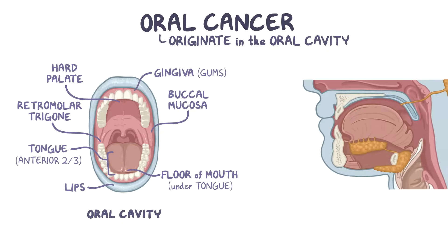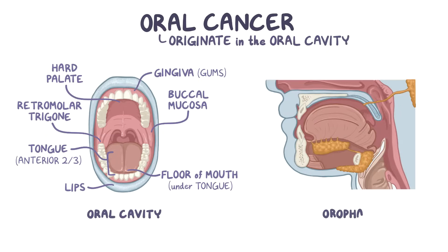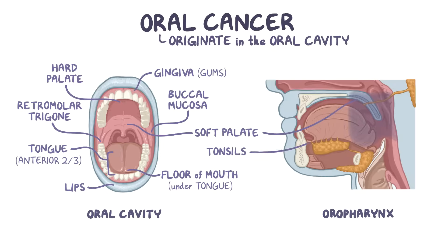Behind the oral cavity is the oropharynx. The oropharynx includes the soft palate which is the soft part of the roof of the mouth right behind the hard palate, the tonsils, the walls of the throat, and the posterior or back one-third of the tongue.